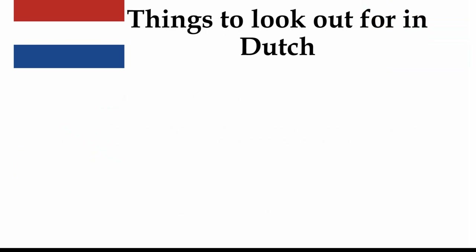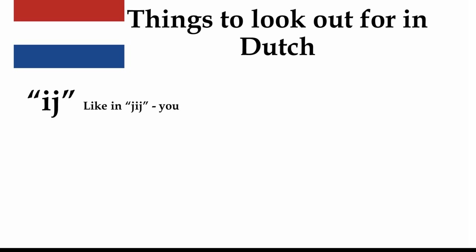First of all, we're going to move on to the things that we need to look out for in Dutch. In Dutch, we have this, which is called the lange A, and it's pronounced A. For example, it's in 'jij', which means 'you', and obviously 'you' is used in a lot of different contexts, so this is a word that comes up a lot. And this is unique to Dutch, so if you see this IJ, then you know that this is Dutch, if it looks like a Germanic language.